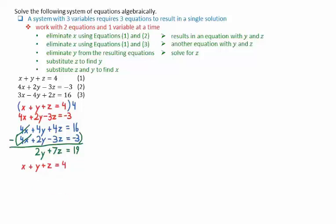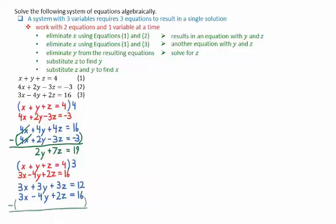We can then use equations 1 and 3 to eliminate x again. Equation 1: x plus y plus z equals 4. And equation 3: 3x minus 4y plus 2z equals 16. We multiply the first equation by 3, giving 3x plus 3y plus 3z equals 12. Subtracting equation 3 eliminates the x, giving us 7y plus z equals negative 4.